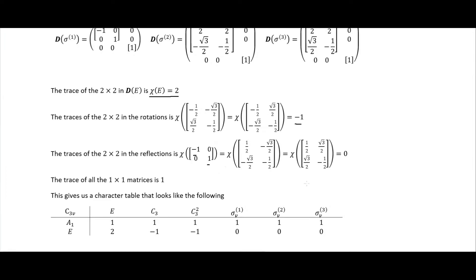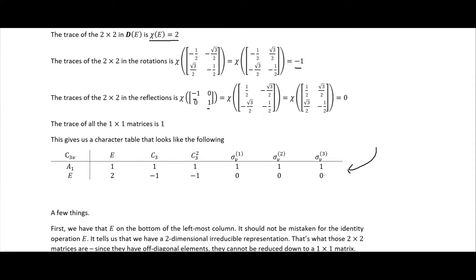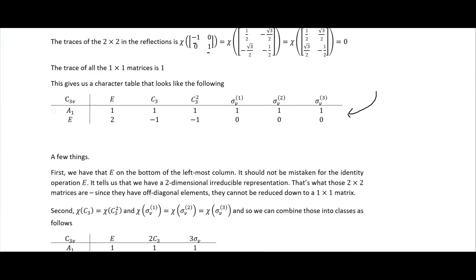That gives us this character table. A key thing to notice is the label E on the side — we should not mistake that for the identity operation. In some places you'll see a hat above the E for the identity operation to distinguish them. This E is simply the name of the irreducible representation that has a 2 in the identity column, because its irreducible representations are 2x2 matrices.